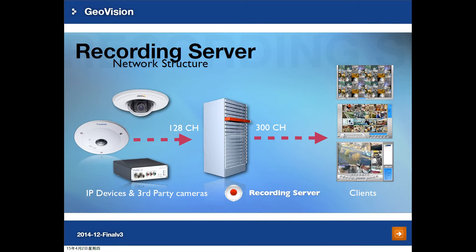Next we'll go into the network structure of our Recording Server. It can support a maximum of 128 channels from IP devices and third party IP cameras. You can also use the Recording Server as a video gateway to distribute a maximum of 300 channels to different GV clients like MultiCam, Control Center, and DM MultiView.